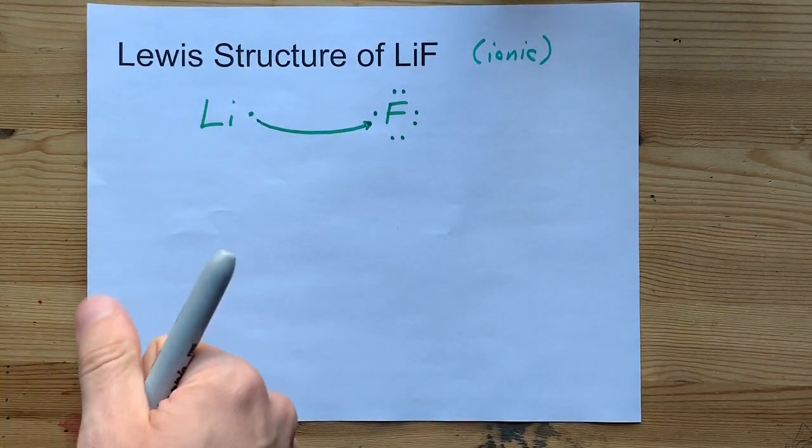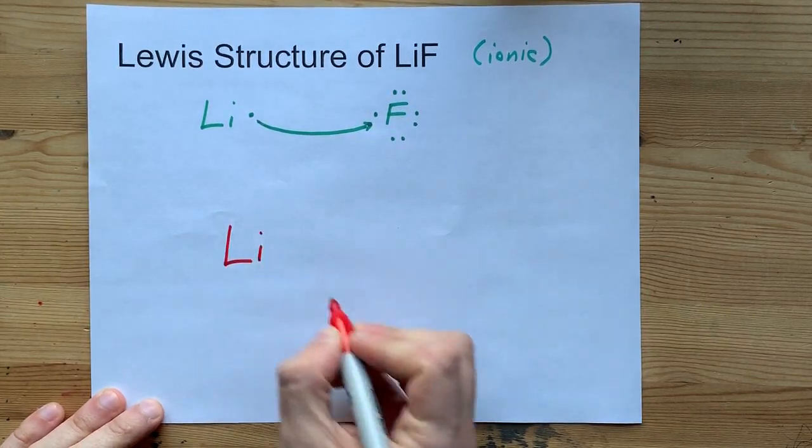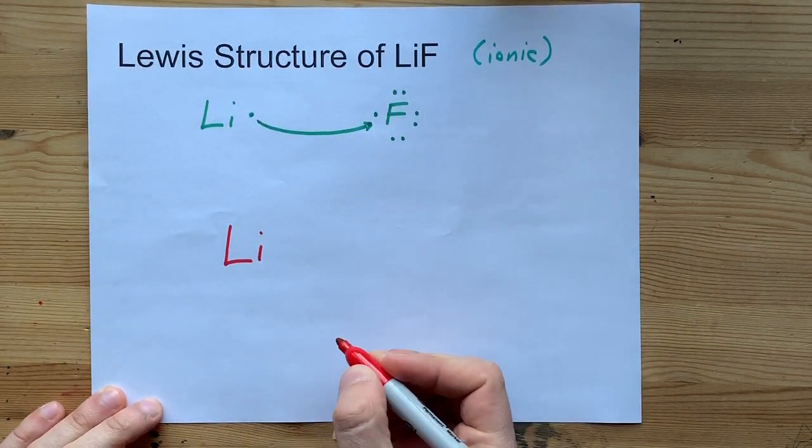The real Lewis structure is showing Li without its one electron. That's Li just like that with no electrons around it.